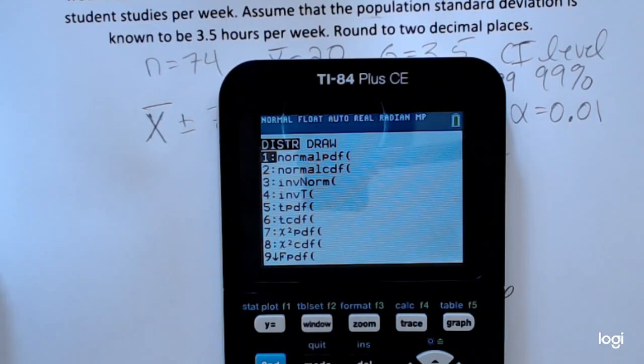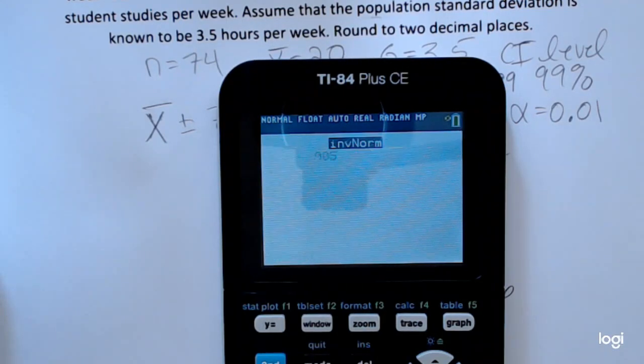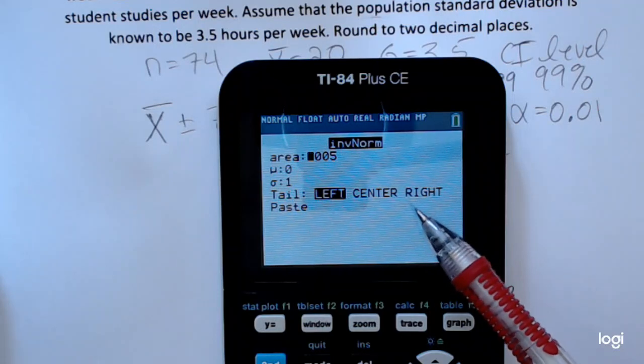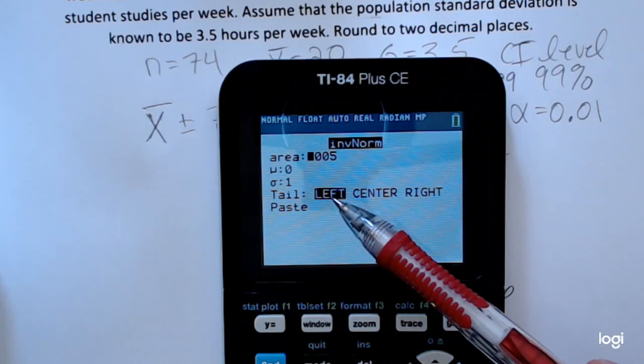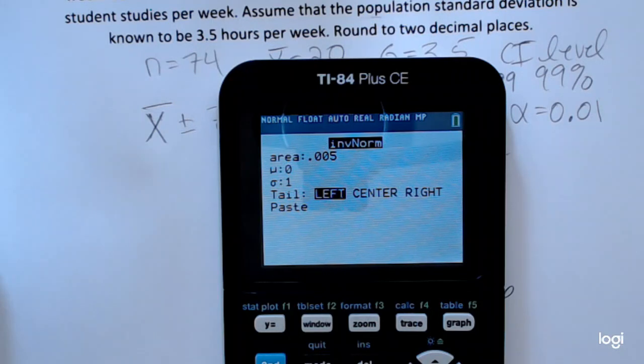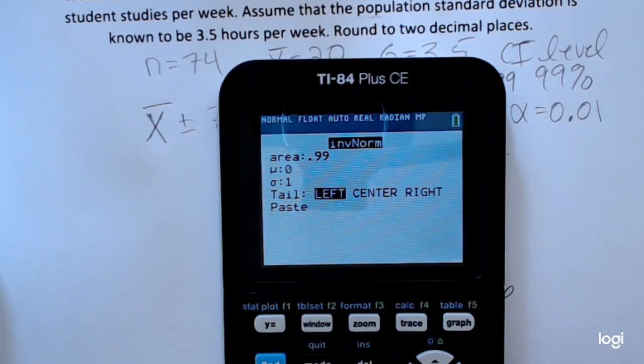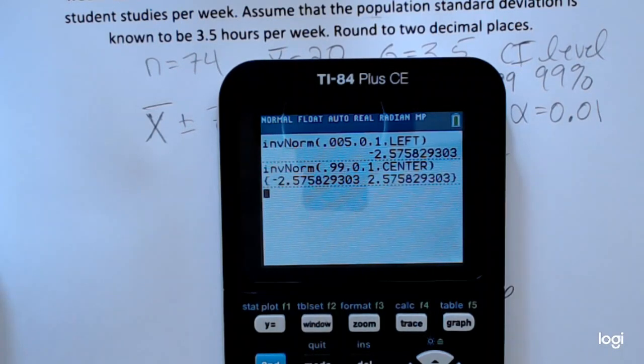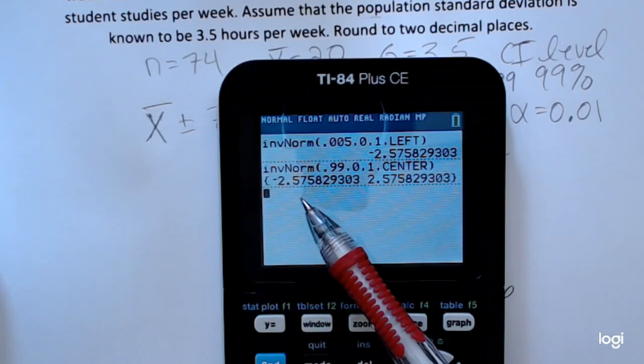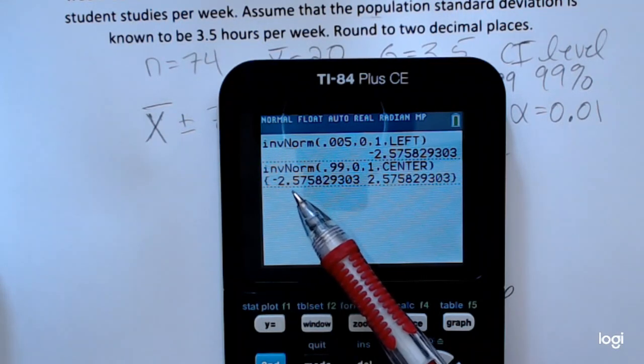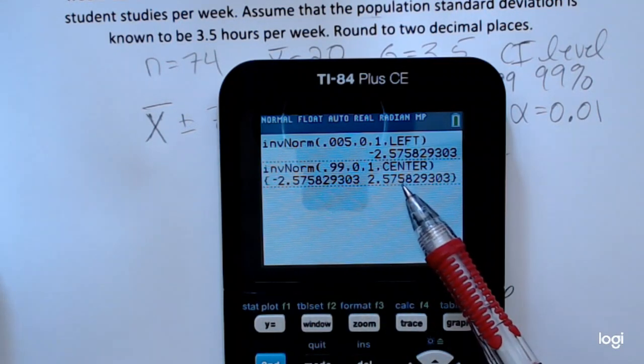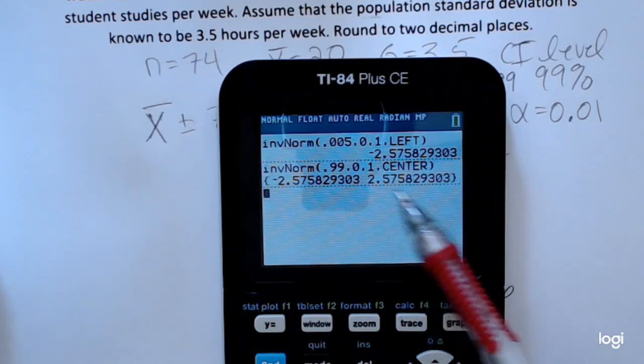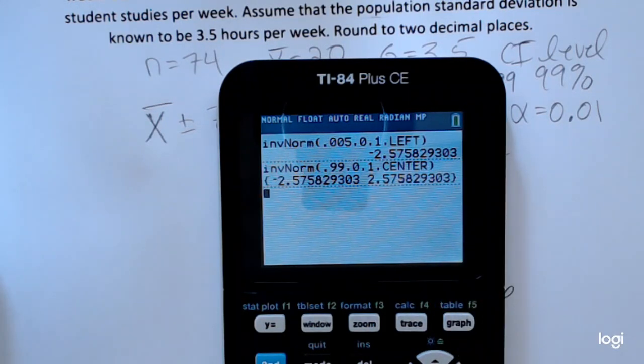Let me go briefly back to that inverse normal screen. Again, I forgot this is a newer TI-84. The older ones don't have these three options. The older TI-84s just read that left tail. So if I wanted to put input as in between, I can put in 0.99 and make that my center. And it gives me those two values, negative 2.576 and positive 2.576. And this is the one you want for the formula.